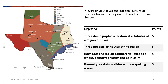Then, how does this region compare to Texas as a whole, demographically and politically? Do 10% of the people in Texas live in this region, or is it more or less? Are they more conservative or less conservative than other parts of Texas? Just how does this region compare to Texas in general? And again, present your slides with no spelling errors. You have a lot of freedom — you can use pictures, graphs, bullets, whatever you want to do.